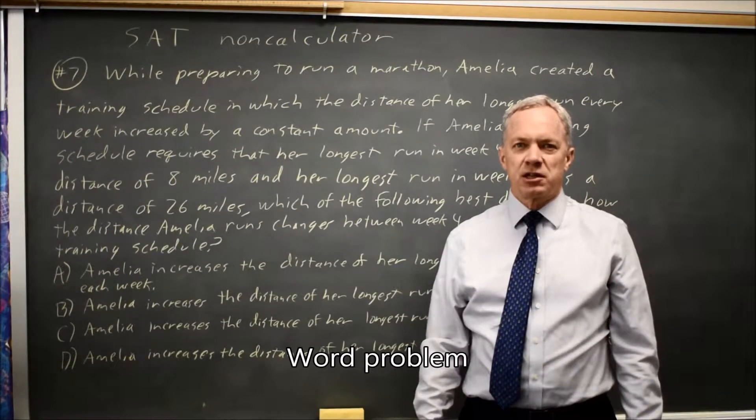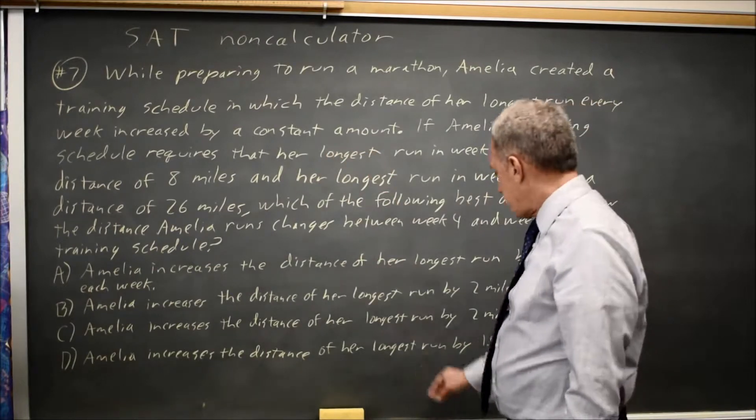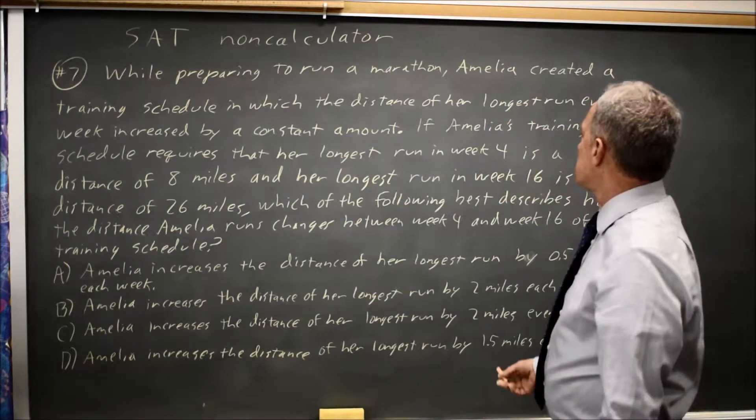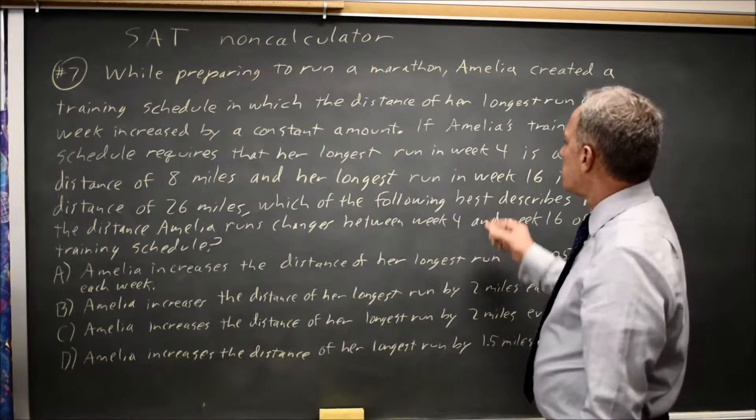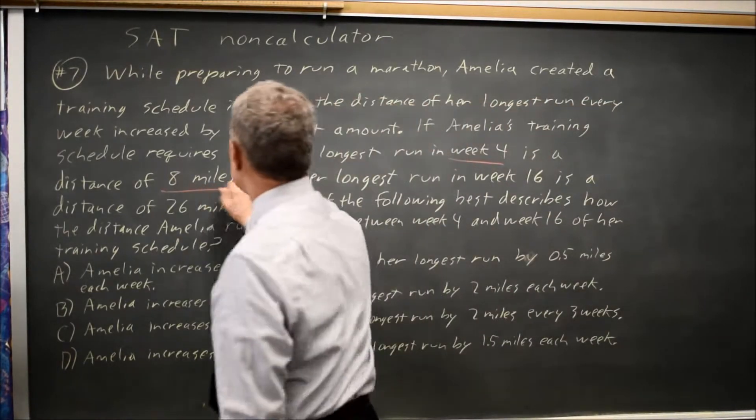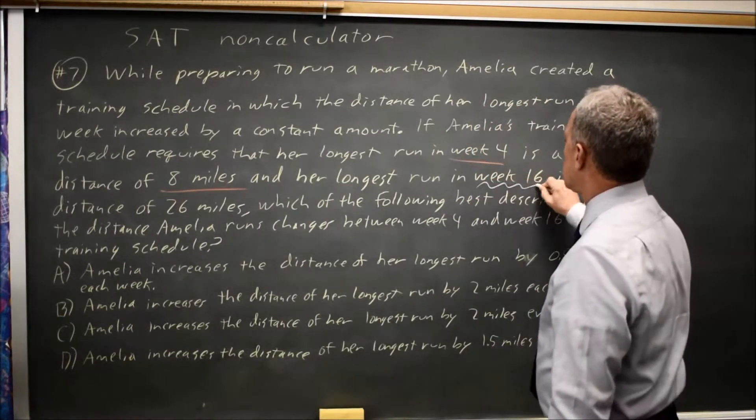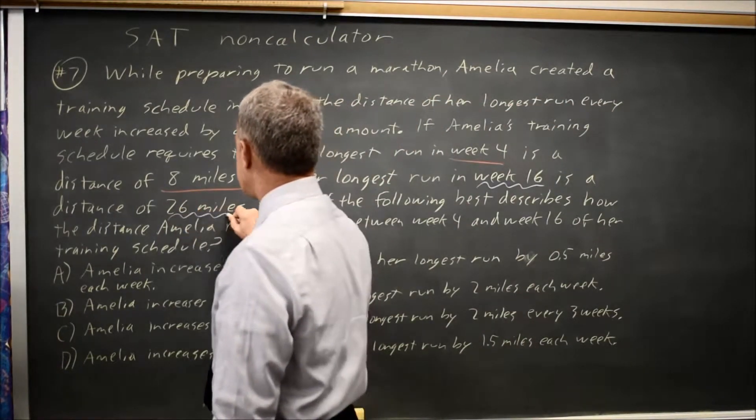This is non-calculator question number seven. We're looking at a training plan for running a marathon, and Amelia has a plan in which week four, her longest run is eight miles, and week sixteen, her longest run is twenty-six miles.